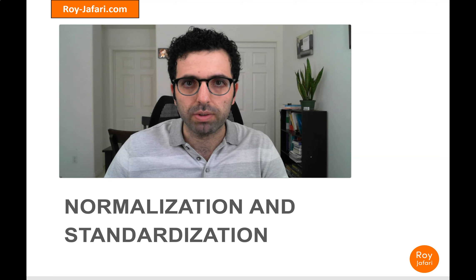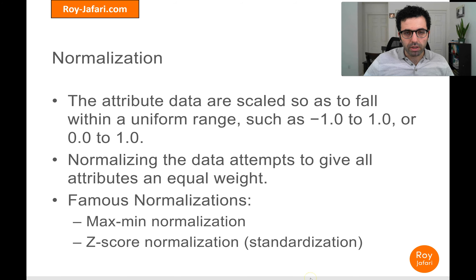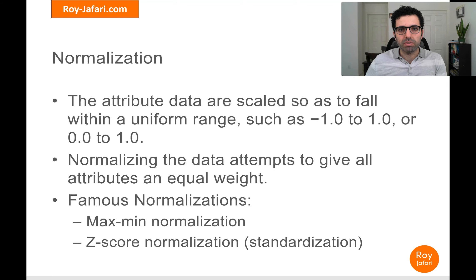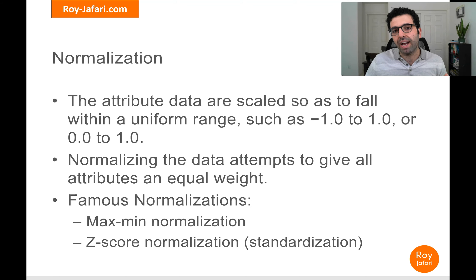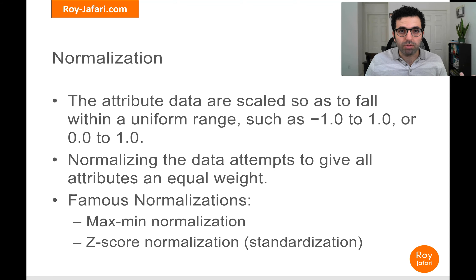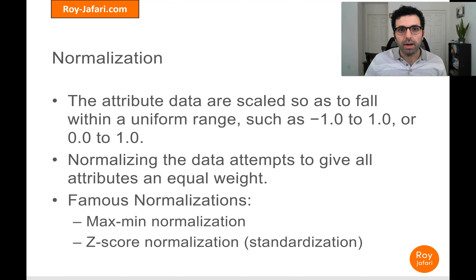Normalization is when we use a formula to make sure that our data are represented in a different scale. Normally when we normalize, we scale our data to be between zero and one, but it doesn't have to be that way — it could be from negative one to one, or negative two to two, and so on. For the most part what we use is zero to one, or negative one to one, and we just use this formula.